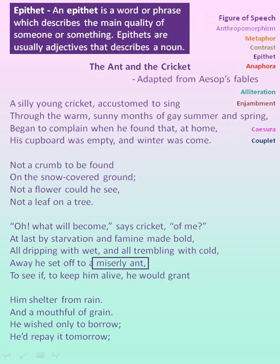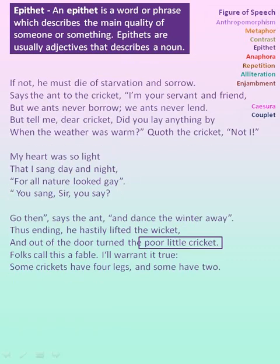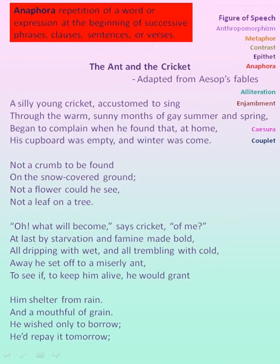Here the ant is described using the word miserly, hence epithet. 'Poor little cricket' — here cricket is described using the words poor and little, hence epithet. Next, we shall see anaphora. Anaphora is the repetition of a word or expression at the beginning of successive phrases, clauses, sentences or verses.